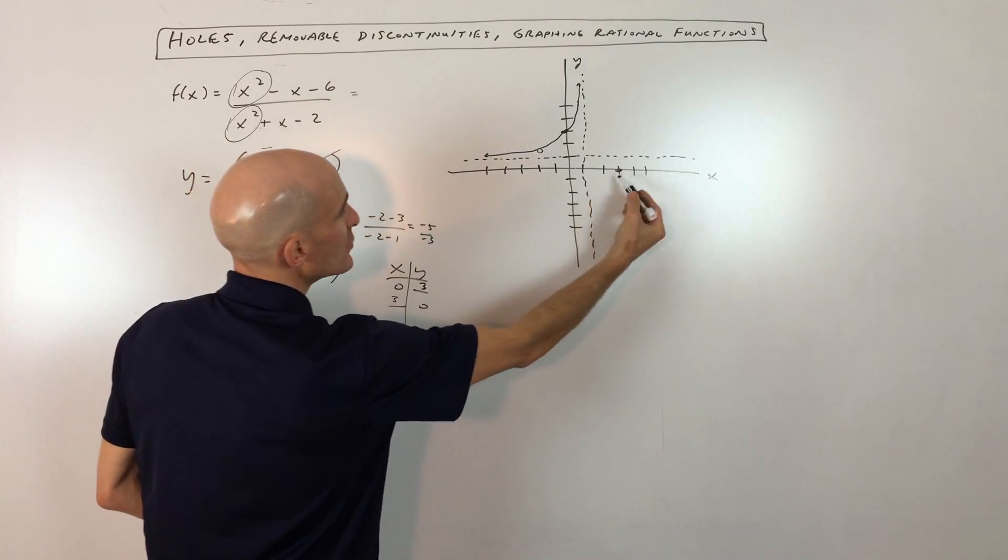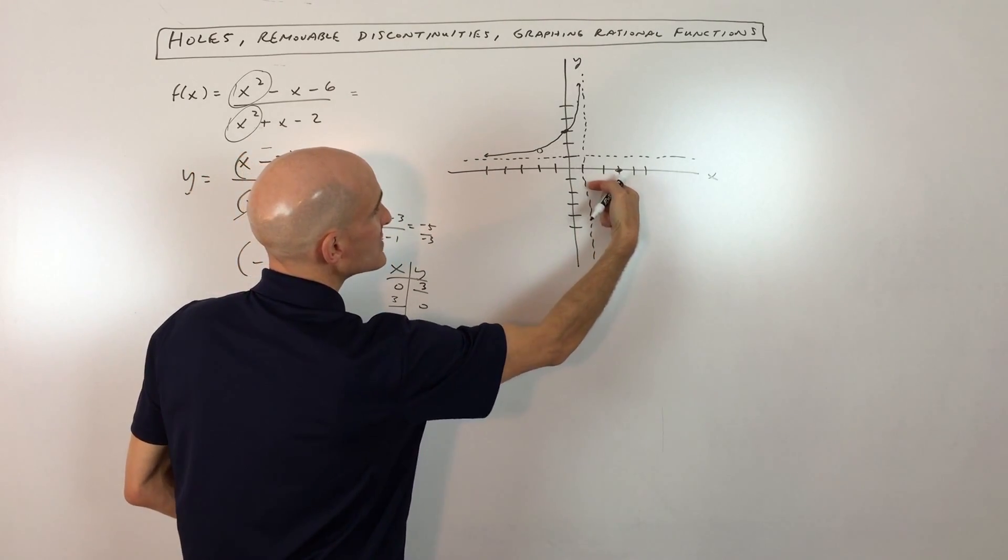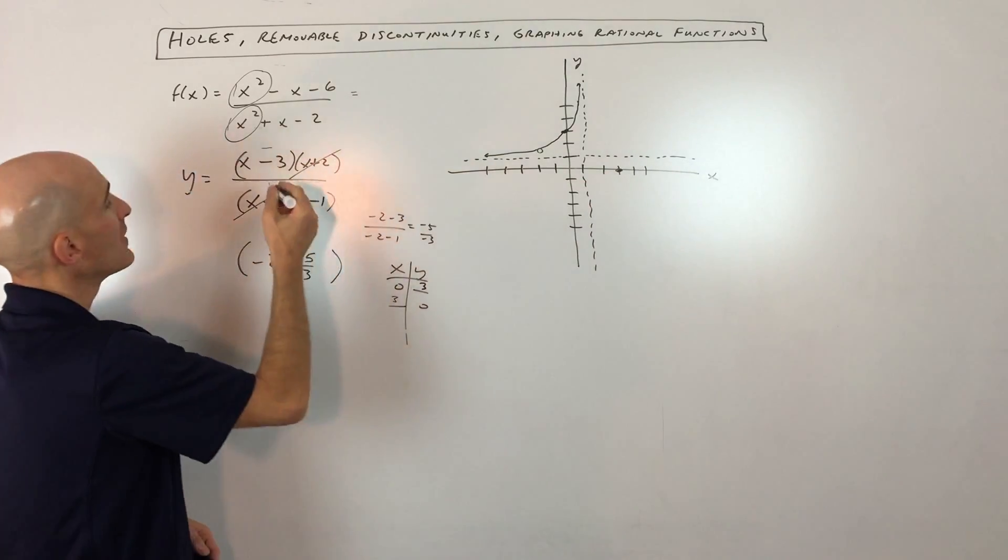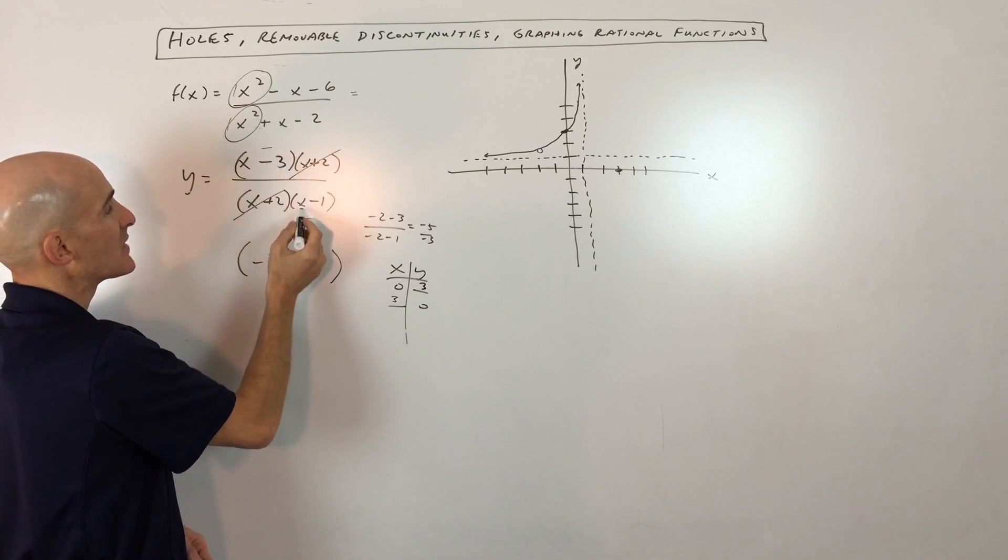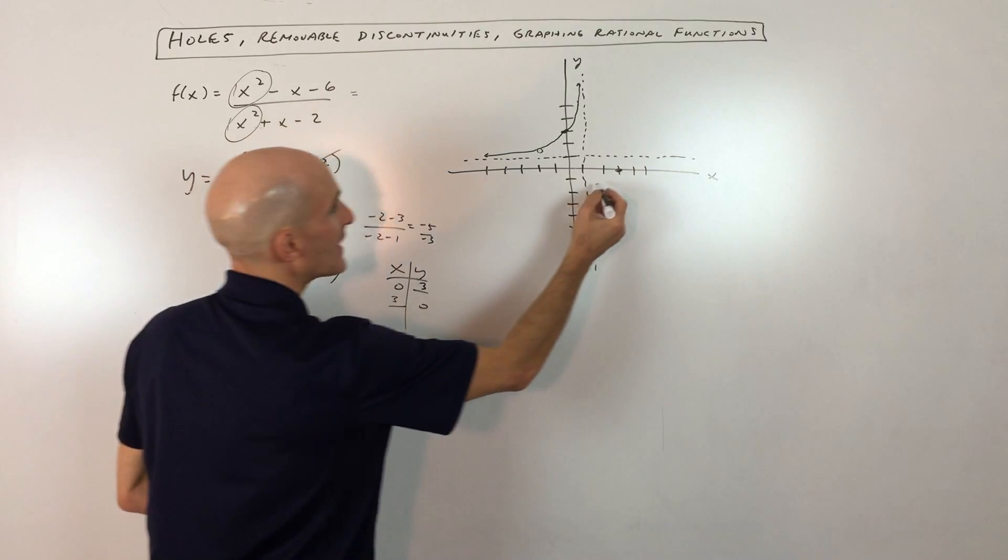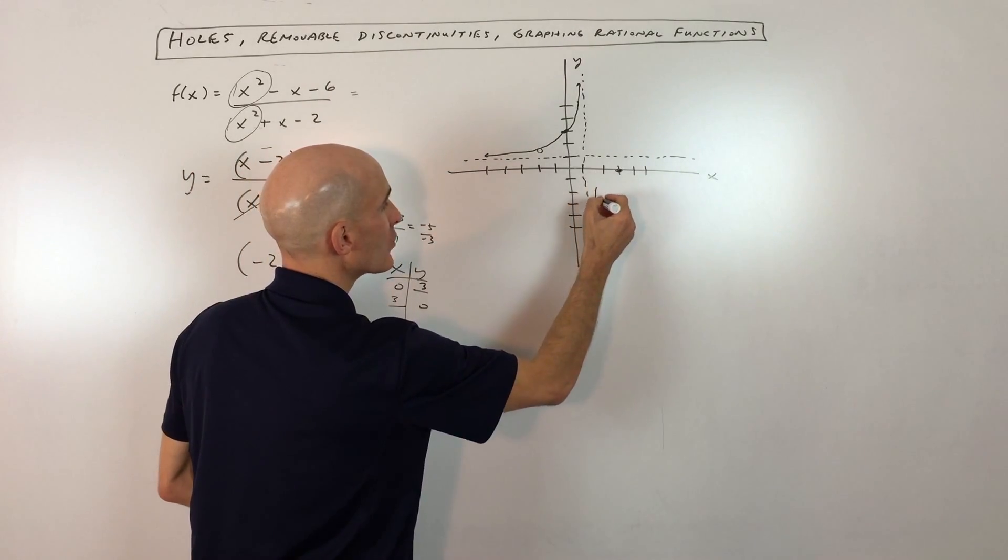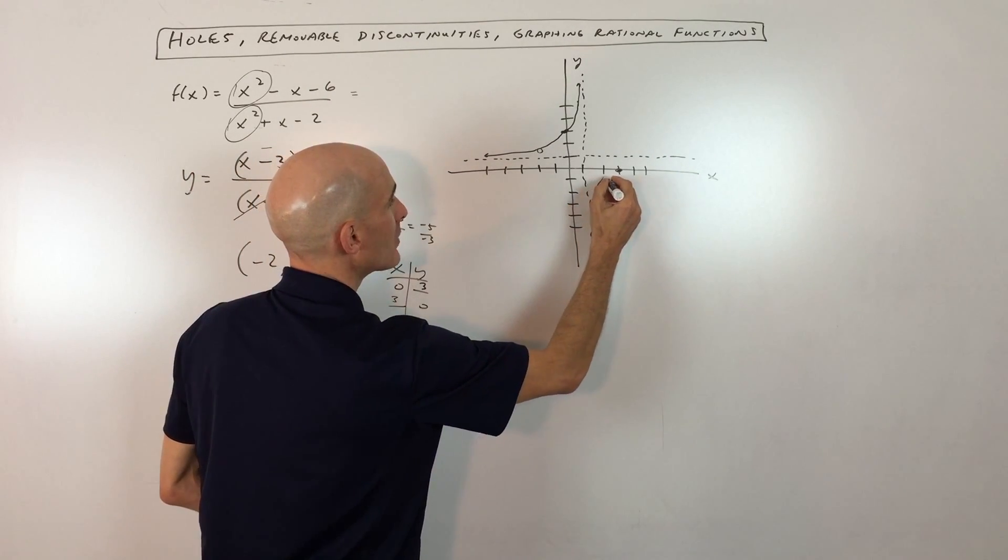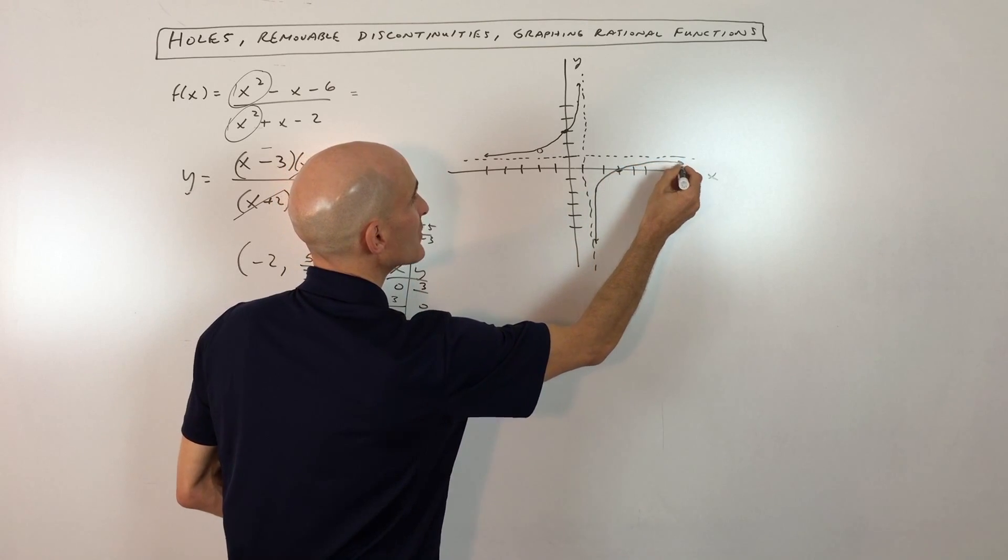And then over here, when you approach the vertical asymptote from the right side, let's say we put in 1.1, that's going to give you 1.1 minus 3 is a negative. 1.1 minus 1 is a positive. A negative divided by positive is a negative, which tells you as you're approaching this vertical asymptote, the graph is going down, down, down. So basically the graph is going to look something like that.